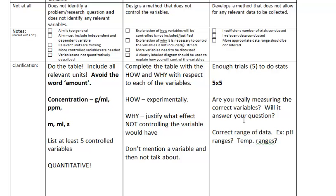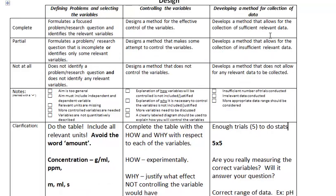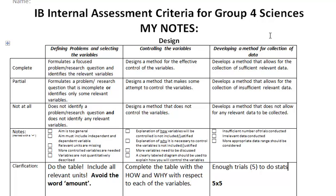Are you really measuring the correct variable, correct range of data? I've talked about that already. The key point here is if you don't do any trials, you can't even calculate an average. If you can't calculate an average, then you won't be able to actually do any sufficient statistical analysis, and that's automatically going to mess you up here and in the next section as well, too. All right. If you have any questions, please post them. Thank you.